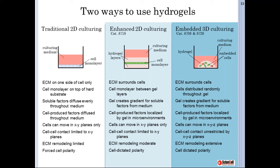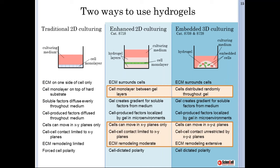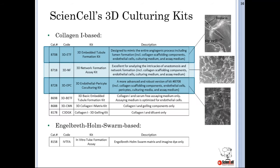There are at least two ways to use hydrogels in 3D cell culturing, and we have kits for both. The enhanced 2D method is basically a gel sandwich where a monolayer of cells is cultured between two hydrogel layers. The embedded 3D method is a true 3D culture where cells are interspersed throughout the hydrogel. The advantages of both hydrogel methods over traditional 2D have already been discussed. The choice between enhanced 2D and embedded 3D depends on your objective.